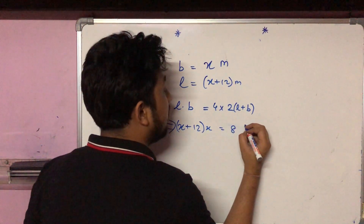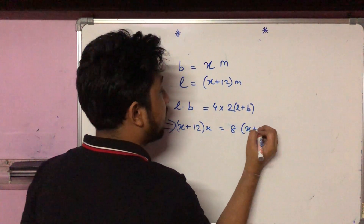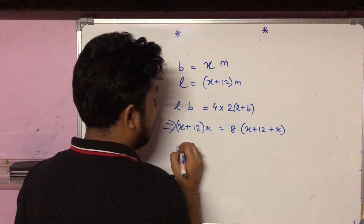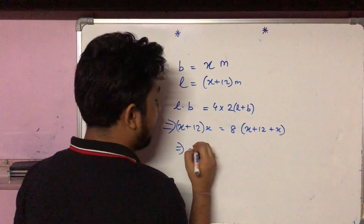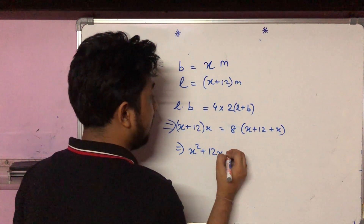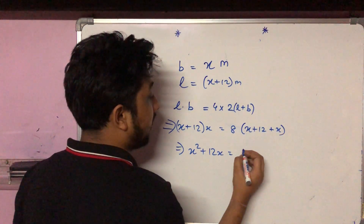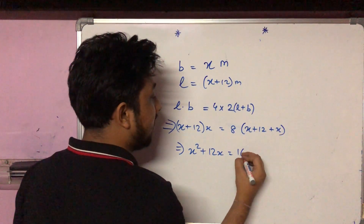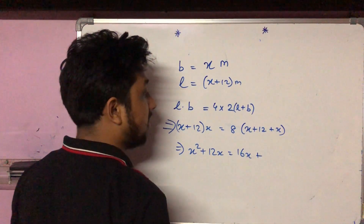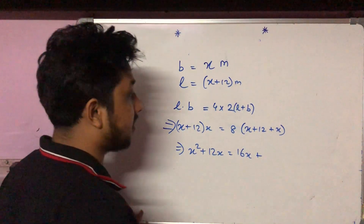So 8 times bracket (x plus 12 plus x). Expanding the left side: x squared plus 12x equals 8 into (2x plus 12).